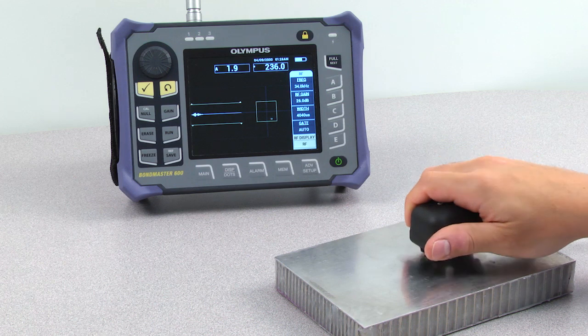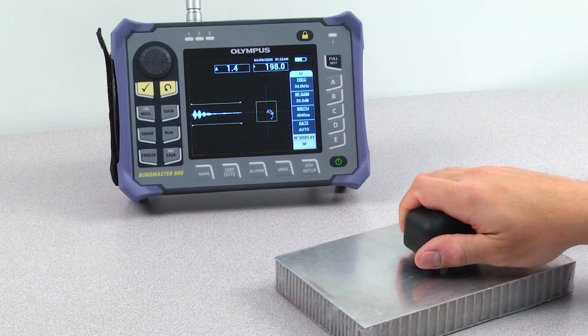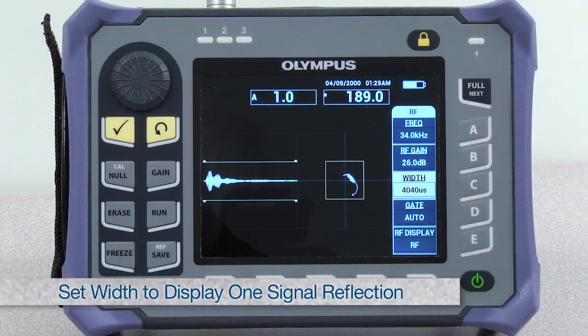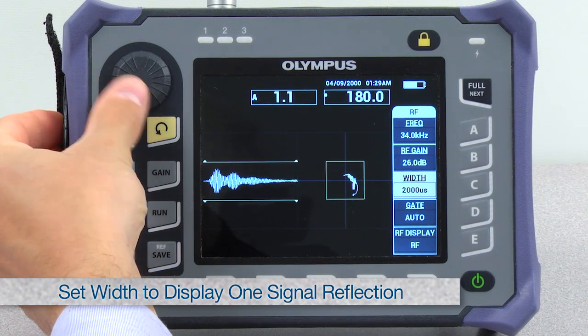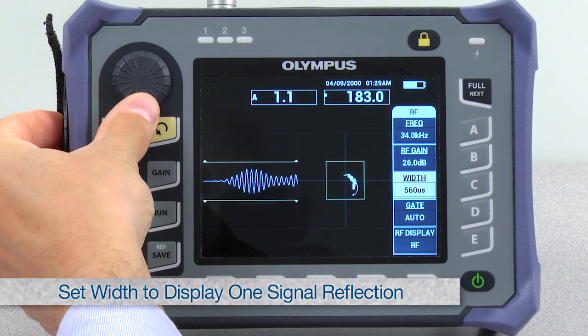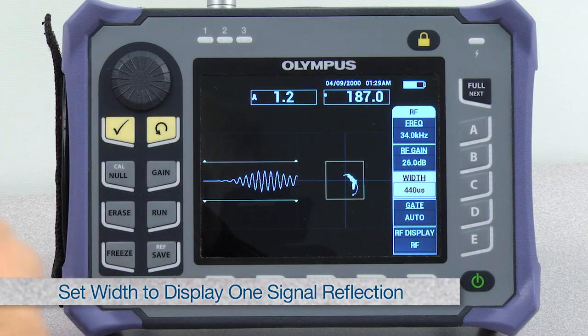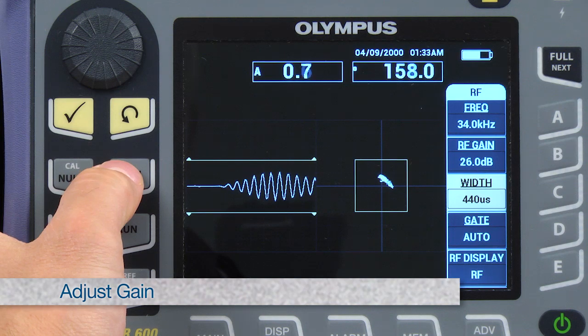Put the probe on a defect-free area and maintain it. Set the width in order to visualize only one signal reflection. Typically, only the first sound reflection has true interest and subsequent reflections show less stability and repeatability. Adjust the gain as needed.